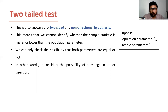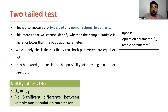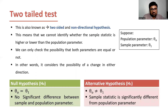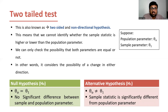Consider the same example: the population parameter is theta 0 and the sample parameter is theta 1. The null hypothesis says that both are equal — there is no significant difference between the sample and population parameter. The alternative hypothesis says that they are not equal, meaning there is a statistically significant difference between the sample statistic and the population parameter. But whether the sample statistic is greater than or less than the population parameter cannot be identified with the two-tailed test.